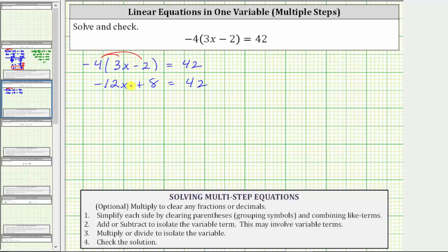The next step is to add or subtract to isolate the variable term, which in this equation is negative 12x. To isolate negative 12x, we need to undo this addition by subtracting eight on both sides of the equation. Simplifying, eight minus eight is zero. The left side simplifies to negative 12x. This is equal to 42 minus eight is equal to 34.